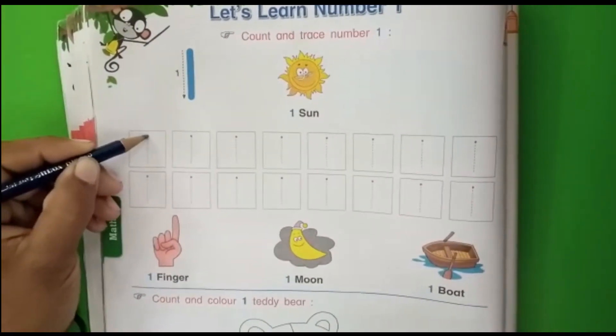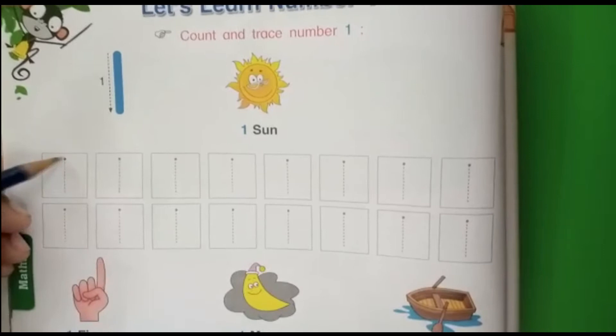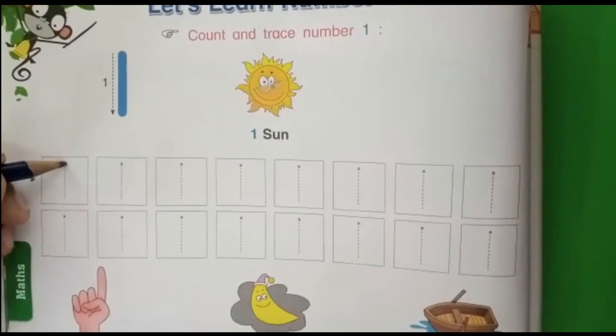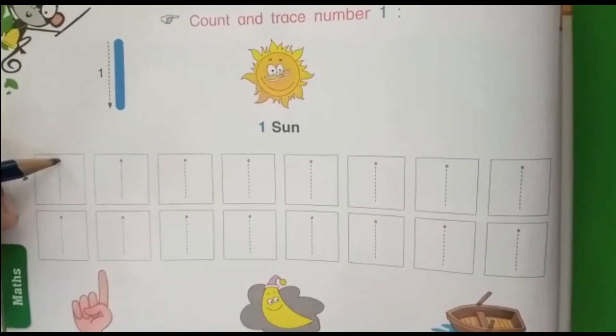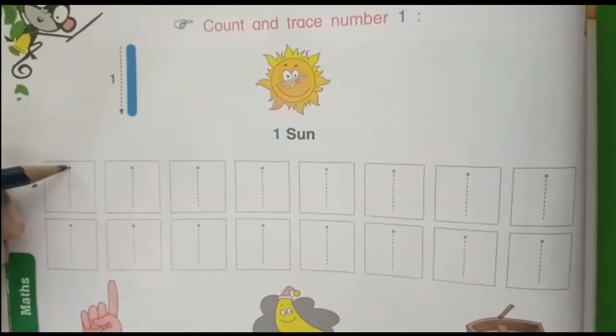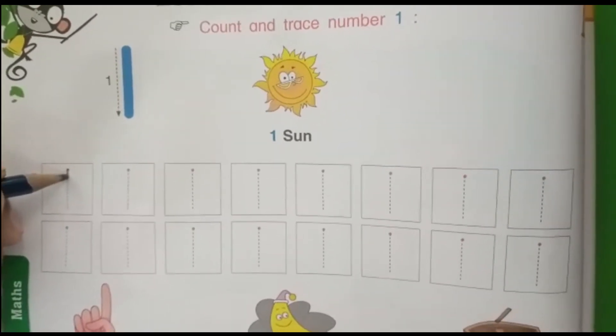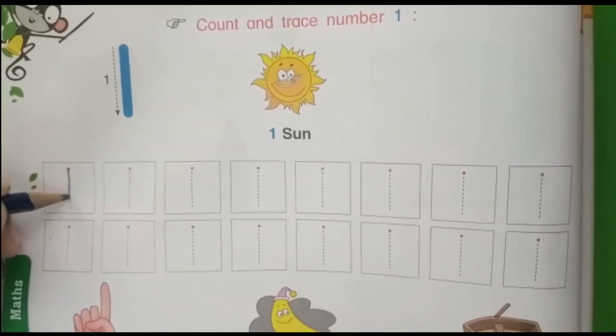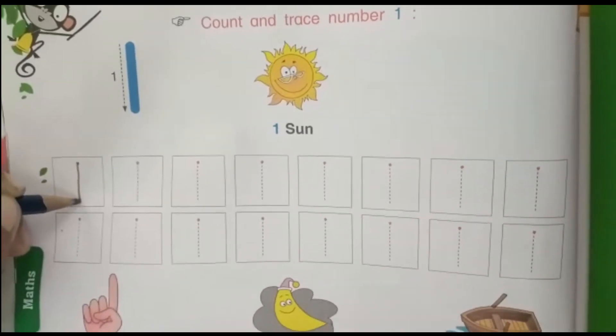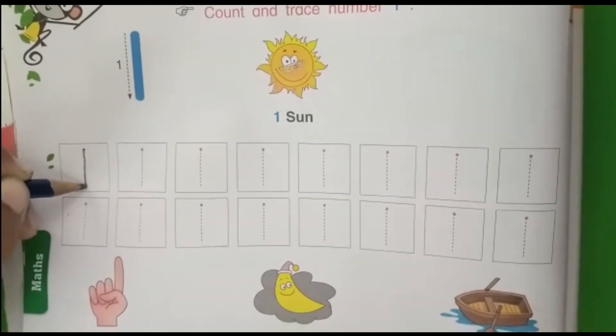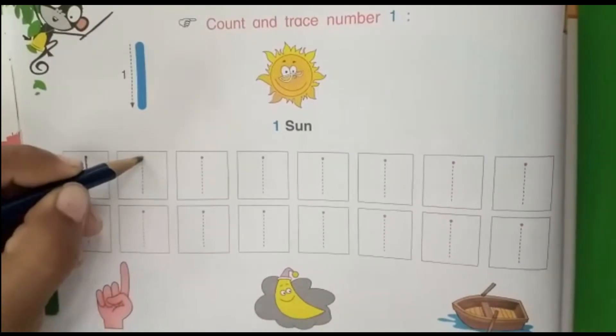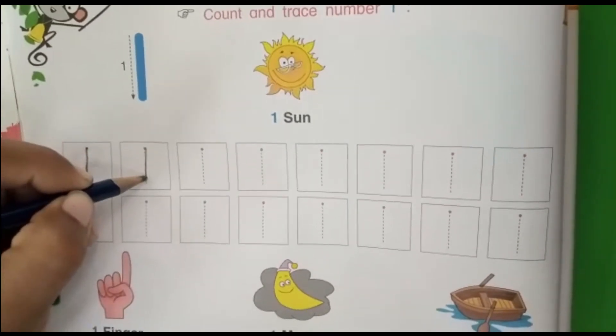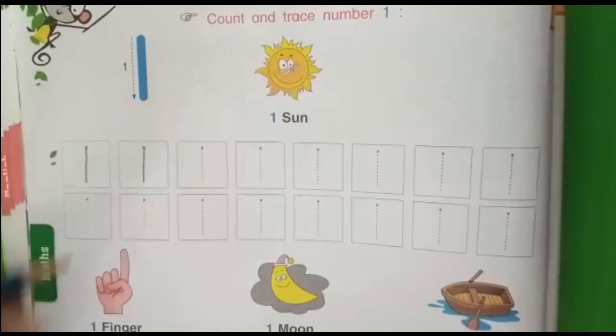So all of you see here how to write number 1. You can see here, here is a red dot. Start from the red dot and join this dot-dot line like this. This is the number 1. Everyone say and write this number 1.